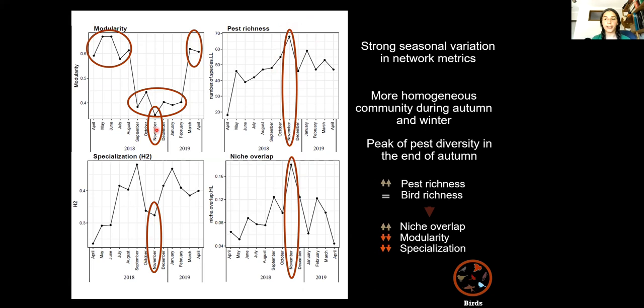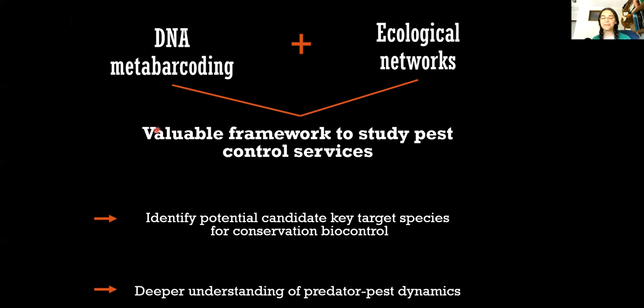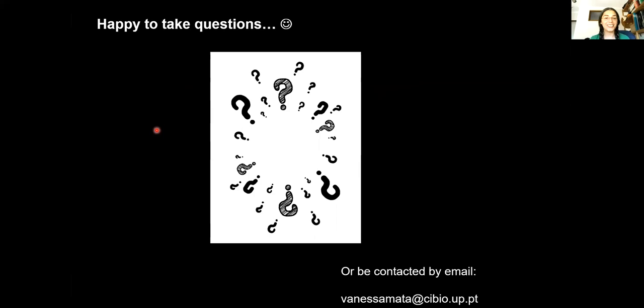To conclude, DNA metabarcoding combined with ecological networks constitute a valuable framework to study pest control services by insectivorous vertebrates, allowing not only to identify potential candidate target species for conservation and pest control but also allowing a deeper understanding of predator-pest interactions and dynamics. That's it. I'm happy to take questions or be contacted by email if you think about something in the future. Thank you.